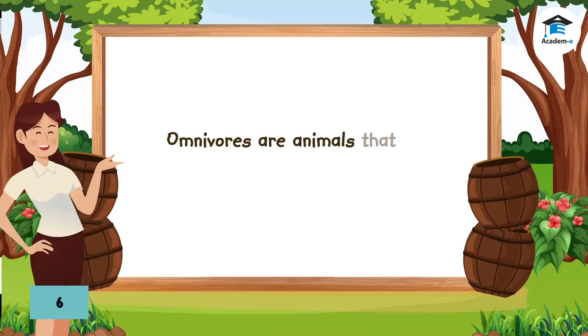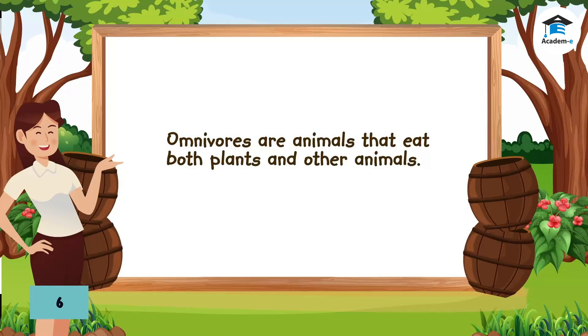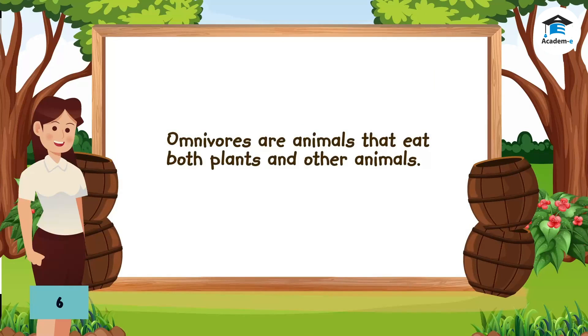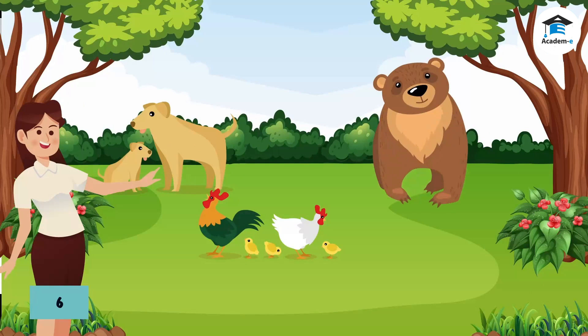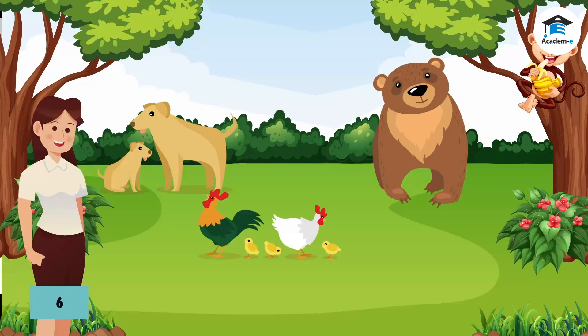Omnivores are animals that eat both plants and other animals. Examples are chickens, dogs, bears, and monkeys.